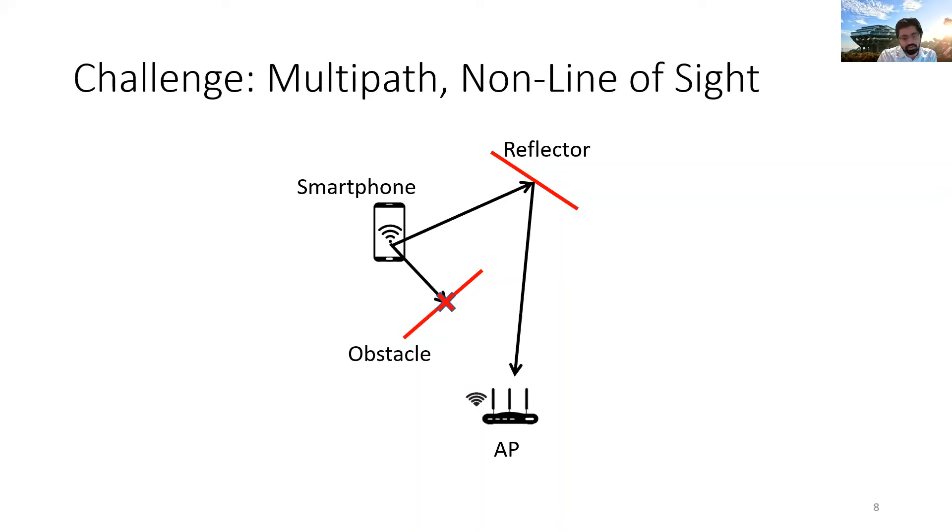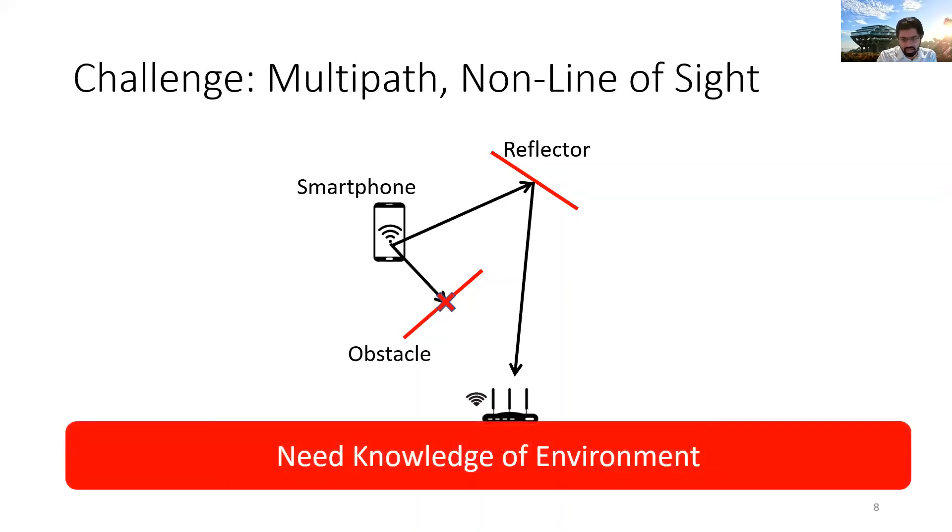A simple solution is if I knew exactly what and where these obstacles and reflectors are, I can get the location of the user. But unfortunately, to describe these properties is extremely complex. And this is where deep learning will help me in building an implicit model of the environment and localize accurately.